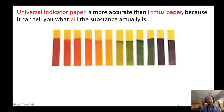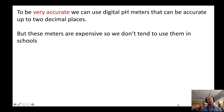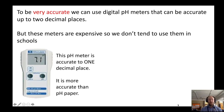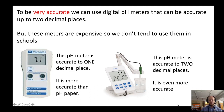By using universal indicator paper, this is going to be more accurate than litmus paper, because it can tell you exactly what the pH of the substance is to the nearest round number. We can be even more accurate by using a digital pH meter, and these can normally be accurate up to two decimal places, though these meters are very expensive so we don't tend to use them in schools. You can see this pH meter is accurate to one decimal place, which is more accurate than pH paper. This other pH meter has two decimal places after the decimal point, making it even more accurate than the first pH meter.